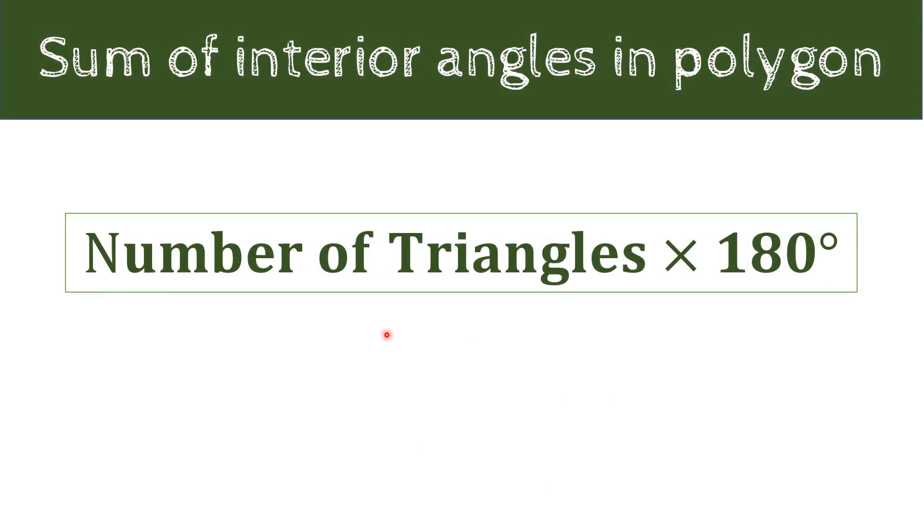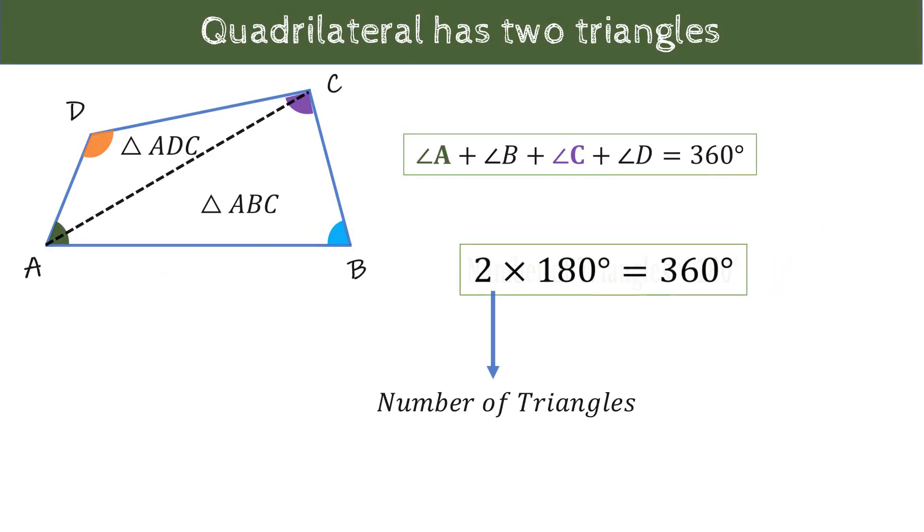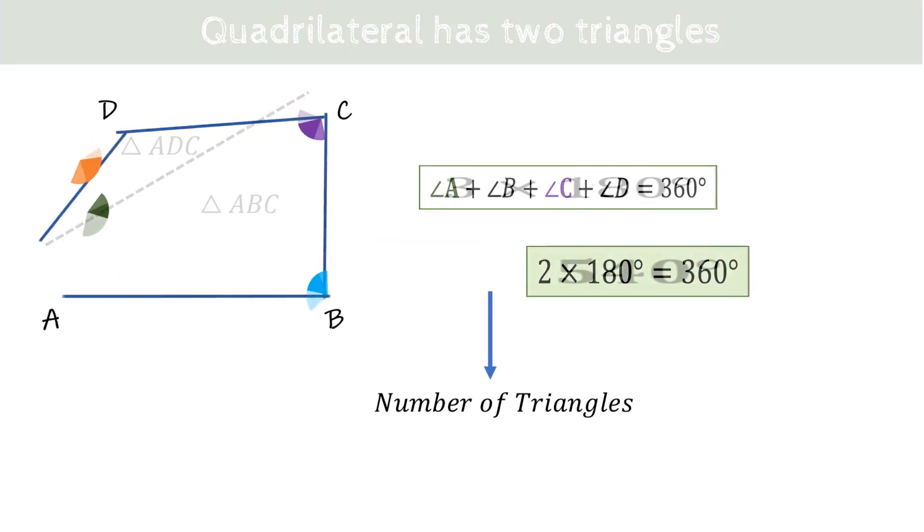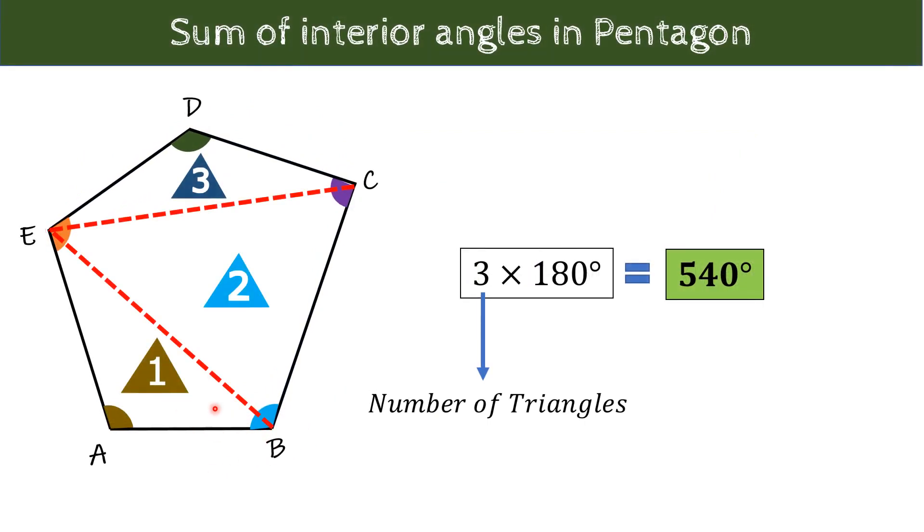We just try to divide it into triangles and apply 180 degrees in the same way to get total sum of interior angles. जैसे हम quadrilateral को two triangles में divide कर सकते हैं तो we get the total sum of interior angles as 2 into 180 which is equal to 360 degrees. Similarly यहां pentagon में हमारे पास 3 triangles है और 3 into 180 is equal to 540 degrees. Hence, we get the sum of interior angles in the pentagon.